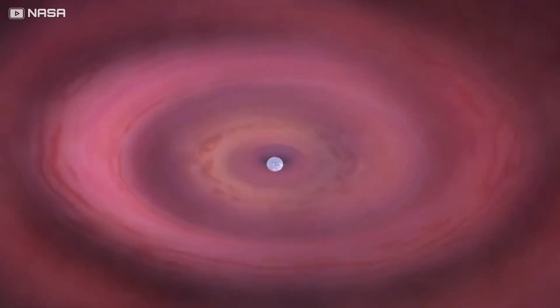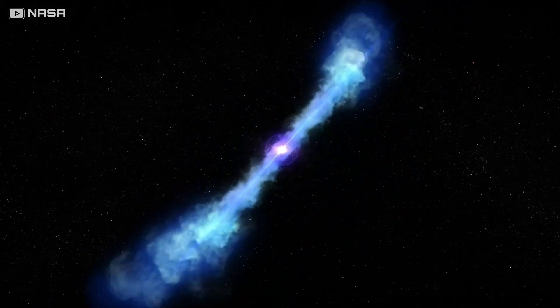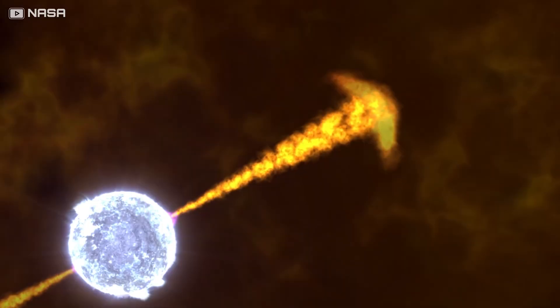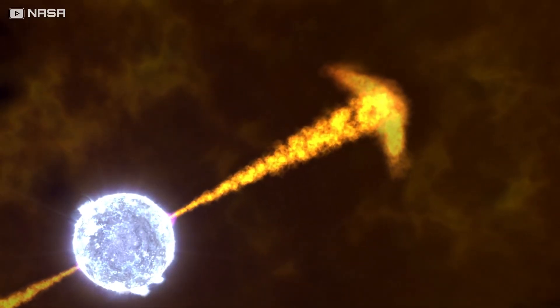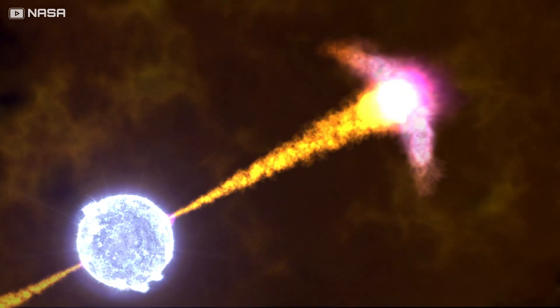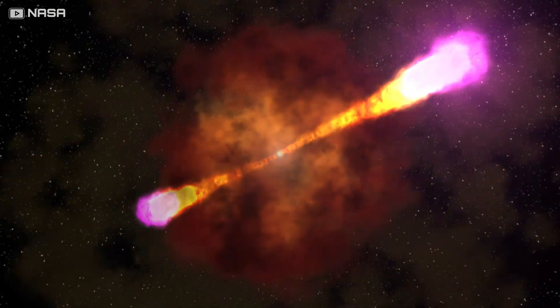And when that happens, the newborn singularity spits out twin jets of radiation from its poles, each one moving close to the speed of light. Those jets slice through the dying star and burst into space like spears. For a few seconds, the event shines brighter than every star in its galaxy combined.